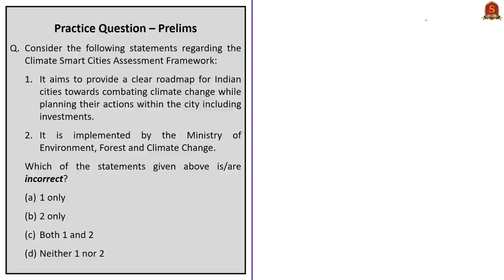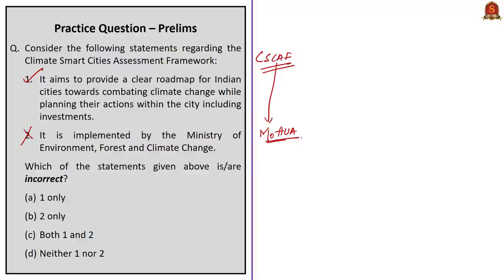Next question: Consider the following statements regarding the Climate Smart Cities Assessment Framework. Statement 1: It aims to provide a clear roadmap for Indian cities towards combating climate change while planning their actions including investments — this statement is correct. Statement 2: It is implemented by the Ministry of Environment, Forest and Climate Change — this statement is incorrect because the Climate Smart Cities Assessment Framework is implemented by the Ministry of Housing and Urban Affairs. Since we have to identify incorrect statements, the correct answer is option B — 2 only.